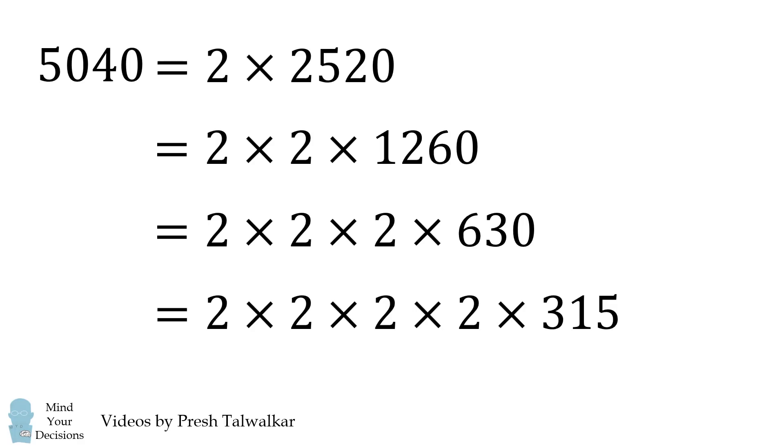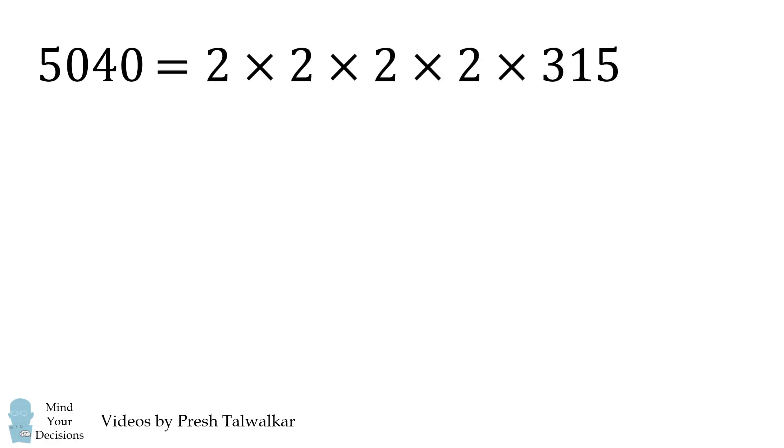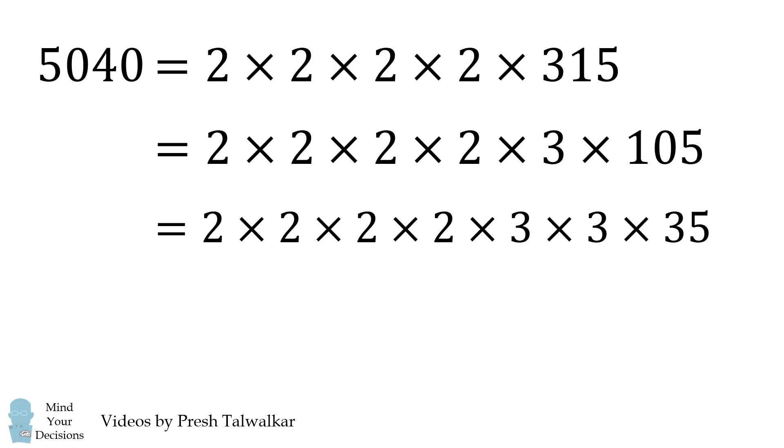315 is odd, so we can't divide by 2 any more times. Now the digits of 315 are 3, 1, and 5. If we add them together, we get 9. So 315 will be divisible by 9. So it will be divisible by 3, and it'll be divisible by 3 again.